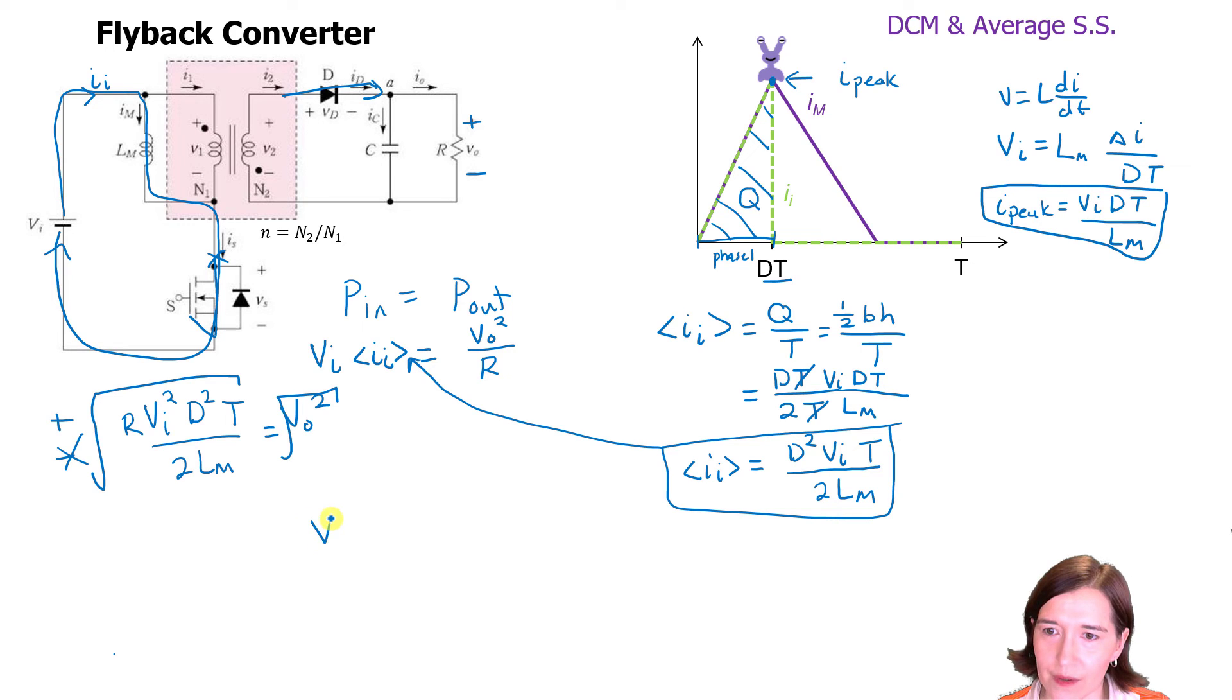So at the end we have V out equals, we have some square roots. Let's put everything together. VI squared, D squared, RT over 2L M. So our final solution is V out equals VI D square root RT over 2LM.